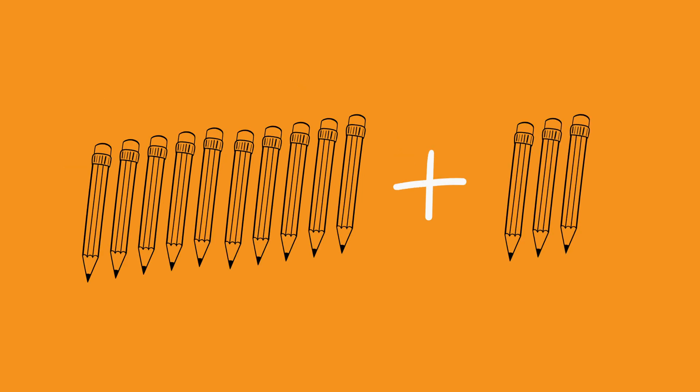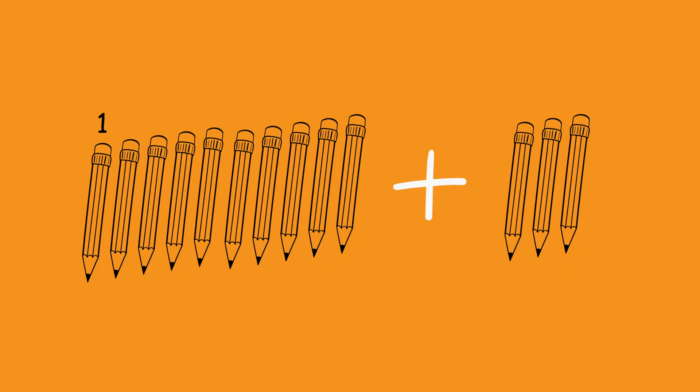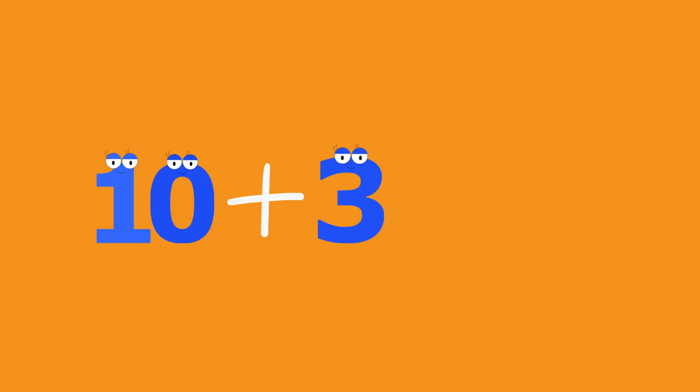Now let us add three more pencils that your sister gave you: one, two, three. Now everything together — how many do you have? One, two, three, four, five, six, seven, eight, nine, ten, eleven, twelve, thirteen. You have 13 pencils all together!